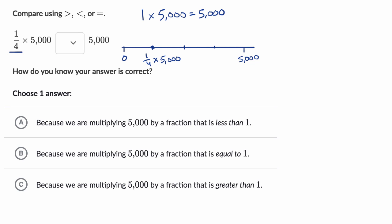Well, how does this value, one-fourth times 5,000, compare to this value, to 5,000? Well, it's clear that one-fourth times 5,000 is less than 5,000.